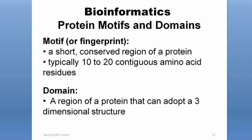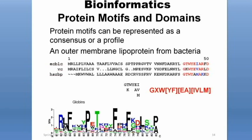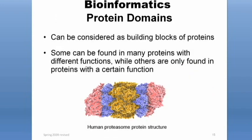The next thing we'll talk about are protein motifs and domains. A motif is a short conserved region of a protein, typically 10 to 20 continuous amino acids long. A domain is a region of a protein that can adopt a 3D structure, and generally this 3D structure has a function. Protein motifs can be represented as a consensus or a profile — the example here is an outer membrane lipoprotein from bacteria, with the motif highlighted in red on the right side. Protein domains can be considered the building blocks of proteins.